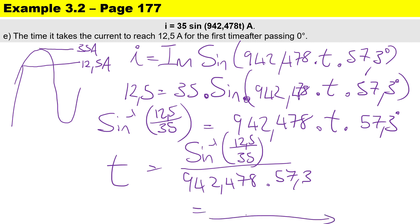Simplifying the calculation — there are several small decimal values involved — the time taken to reach 12.5 amps works out to 387.305 microseconds. That's where we'll stop. Thanks for watching this video.